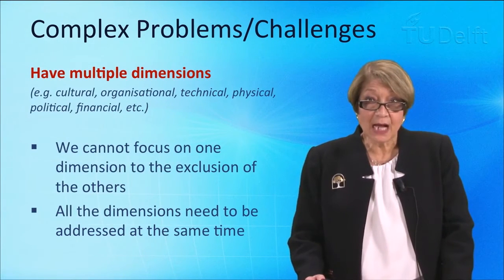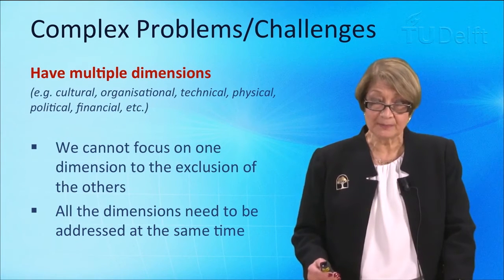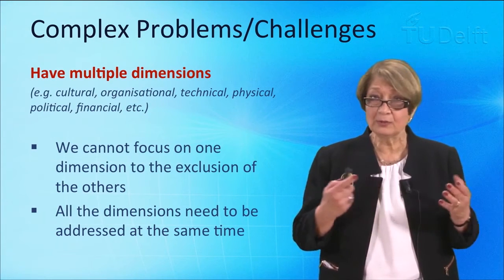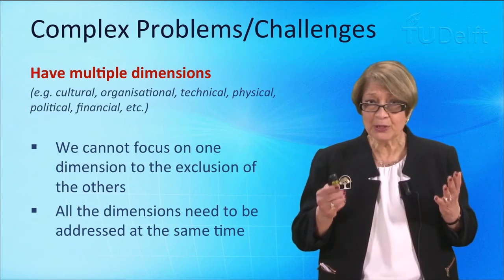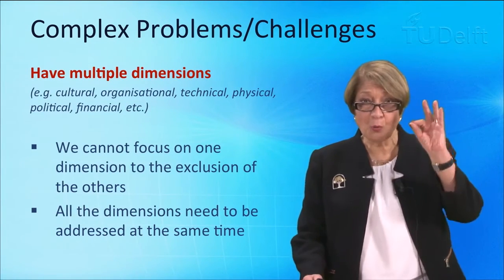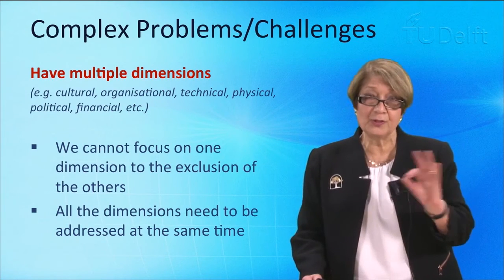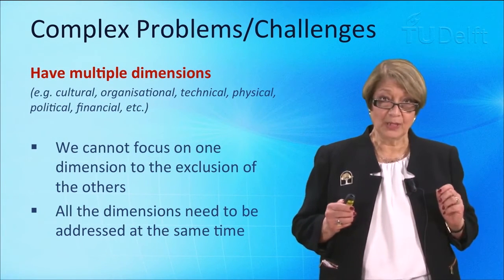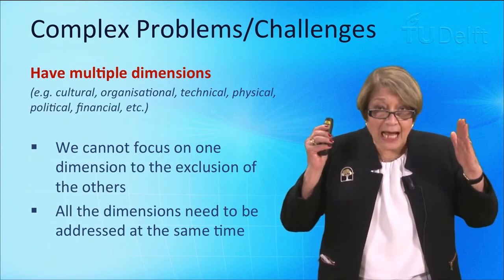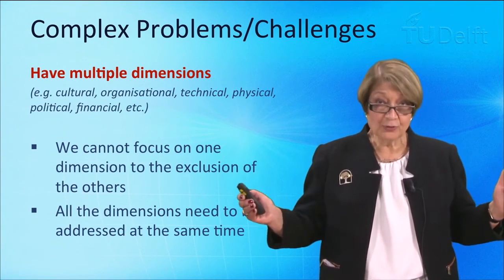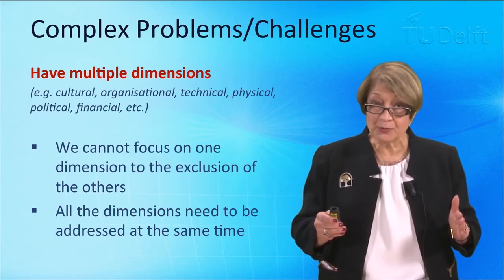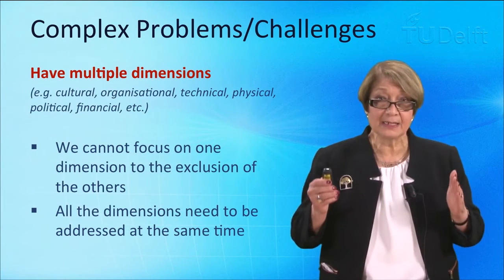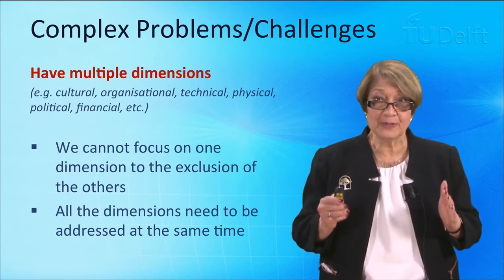Complex problems or challenges have multiple dimensions. By multiple dimensions I mean they can be cultural, organisational, technical, physical, political, financial, etc. And yet what we often do as humans is choose one of those dimensions and focus on that to the exclusion of all others. For example, we might say it's only a technical problem or it's only a financial problem or it's only a cultural problem, and we cannot actually do that, because these dimensions are interrelated, interconnected and they co-evolve. They actually influence and change each other.